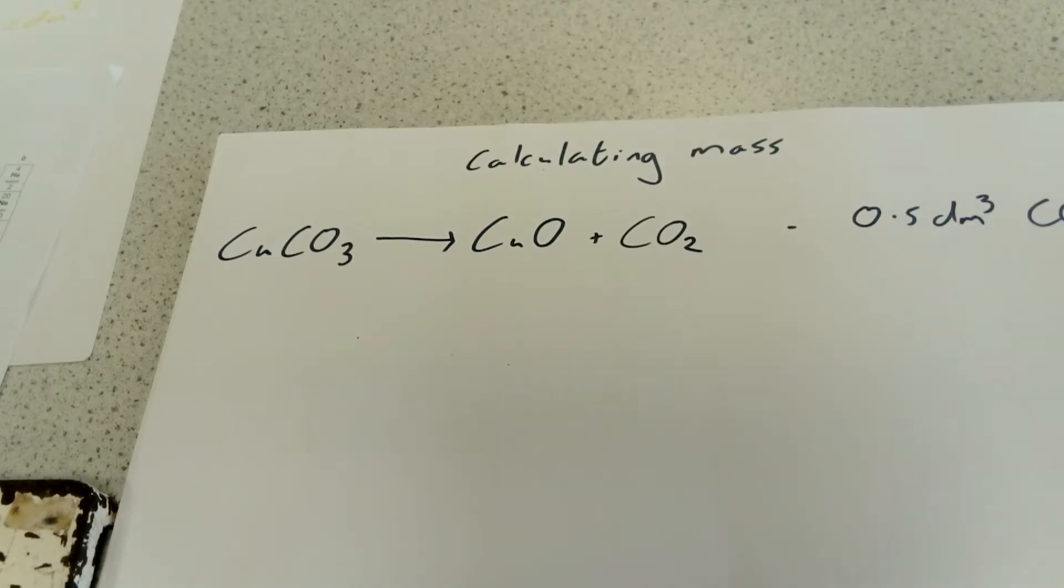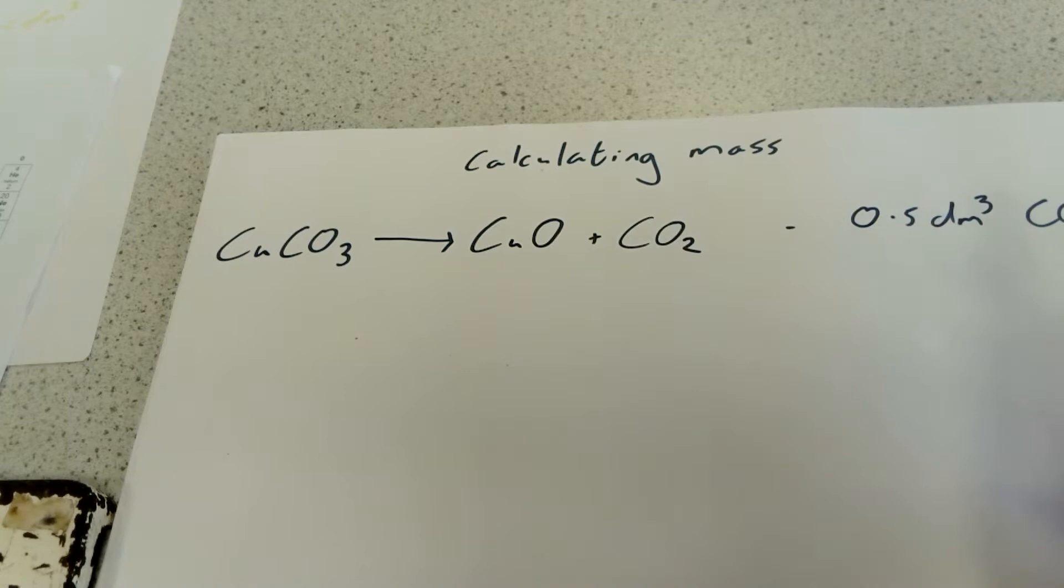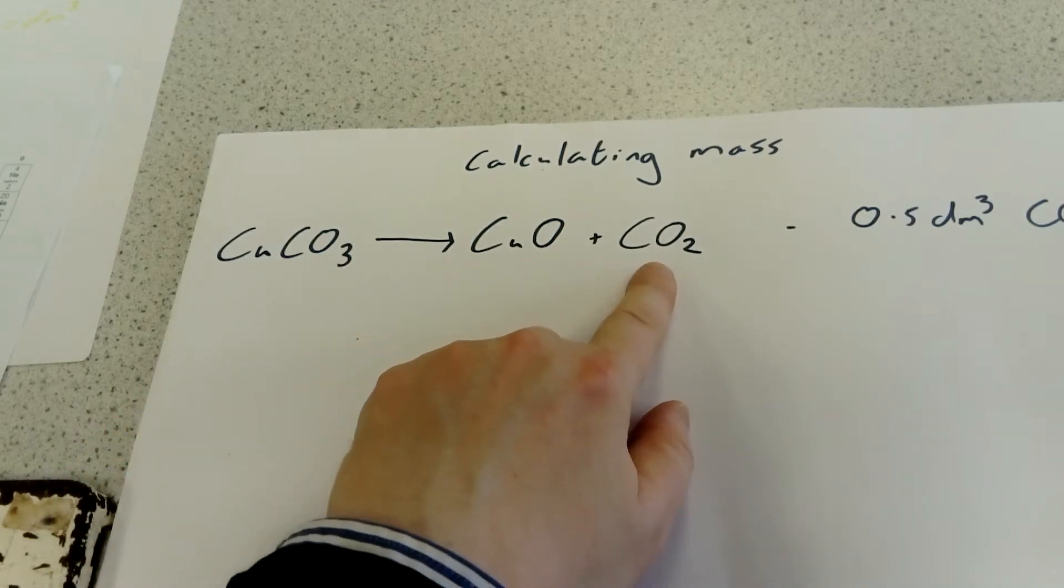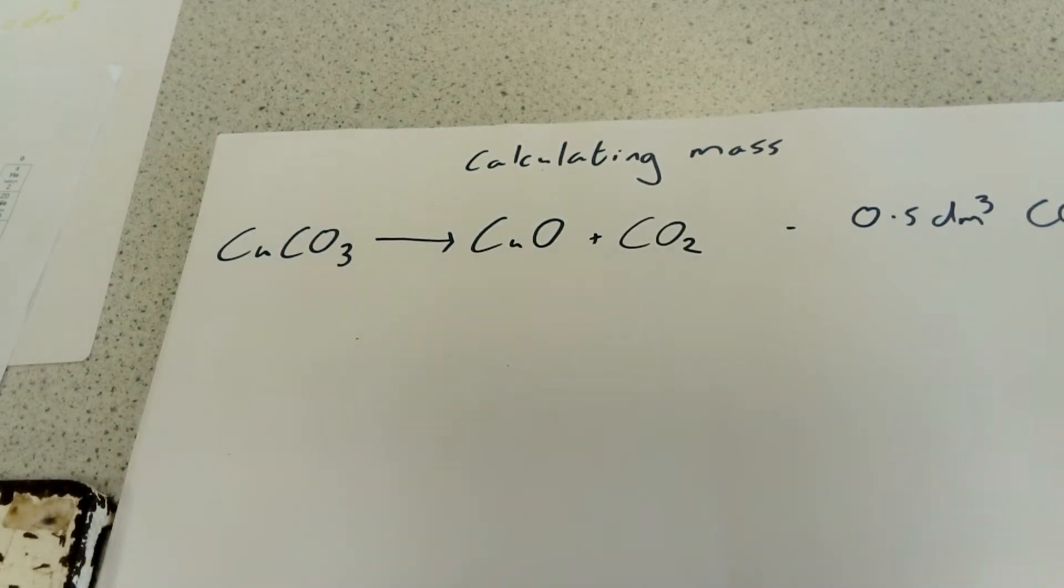If we're going to calculate the mass of something that will need to produce a certain volume of a gas, we can use the equation in a slightly rearranged way. In this example, we've got copper carbonate firmly decomposes to make copper oxide and carbon dioxide. What mass of copper carbonate would you need to produce 0.5 decimeter cubed of carbon dioxide?